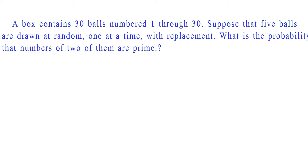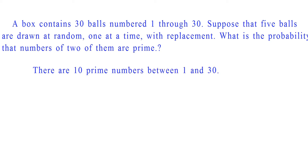Given that the box contains 30 balls, these balls are numbered 1 to 30. Out of 30 balls, 5 balls are drawn at random, one at a time. After each ball is drawn, it is put back in the box before another ball is drawn. We need to find the probability of getting 2 balls marked with prime numbers out of 5 balls drawn. We know that there are 10 prime numbers between 1 and 30.